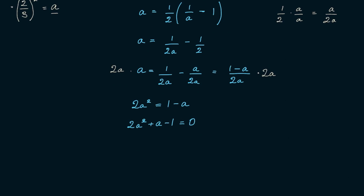How do we factor this? It factors into (2a minus 1)(a plus 1) equals 0. This gives two possibilities: either 2a minus 1 equals 0, so a equals 1/2, or a plus 1 equals 0, so a equals negative 1.